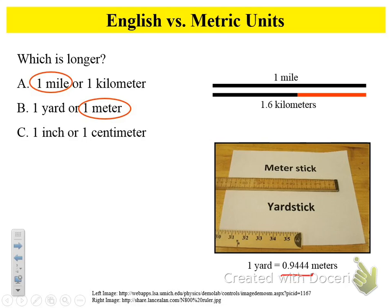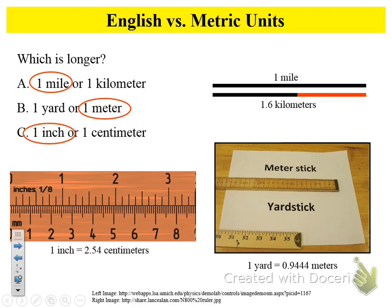Alex, did you figure it out? 125 miles per hour. That sounds about right — I'll double check your math. All right, which is longer: an inch or a centimeter? Thumbs up if you think an inch is longer, thumbs down if you think a centimeter is longer. One inch is bigger. One inch equals 2.54 centimeters.